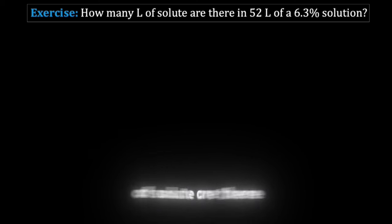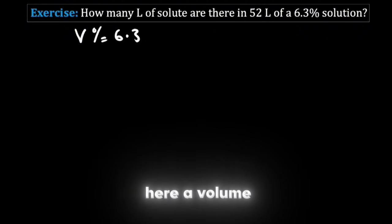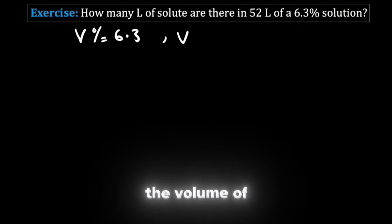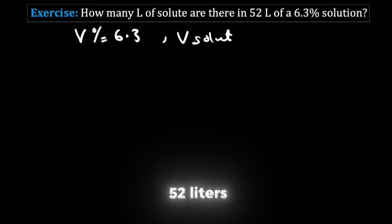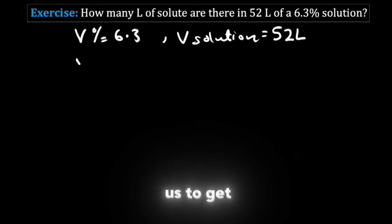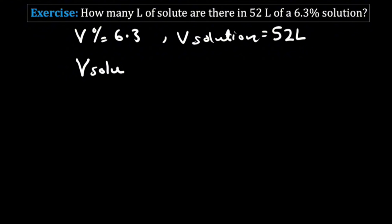How many liters of solute are there in 52 liters of a 6.3% solution? We have here a volume percent of 6.3 and we have here a volume. The volume of the solution is 52 liters and they want us to get the volume of the solute.